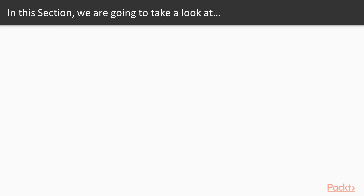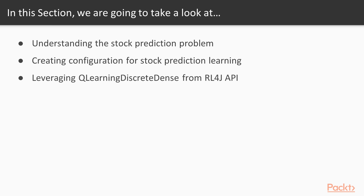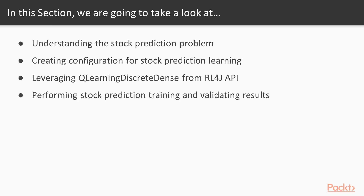Firstly we'll try to understand the stock prediction problem. Then we'll be creating a configuration for stock prediction learning, so we'll create our Q-learning configuration. Next we'll be leveraging Q-learning from the RL4J API. And finally we'll be performing stock prediction training and validating results to see what we were achieving.